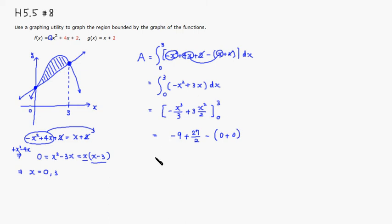So this is equal to, negative 9 is negative 18 over 2, plus 27. So that's 27 minus 18 is 9 over 2. That's the area.